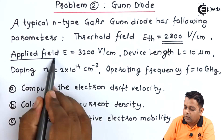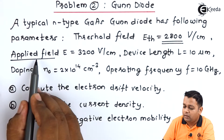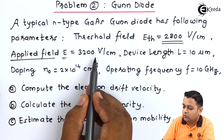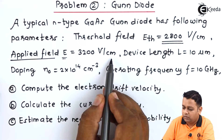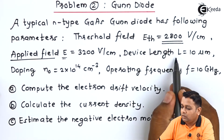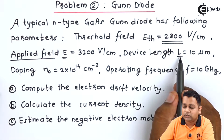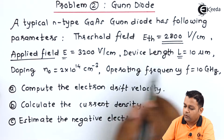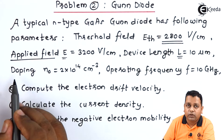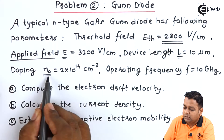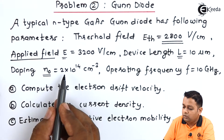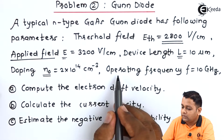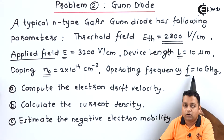The second parameter is the applied electric field E = 3200 volts per centimeter. The device length, denoted by L, is 10 micrometers. The doping concentration, represented as n₀, is equal to 2 × 10¹⁴ per centimeter cube.